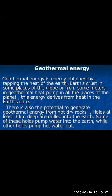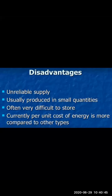The disadvantages of renewable energy include unreliable supply, as the technology is not yet fully developed. Energy is usually produced in small quantities, as seen with solar and wind energy. Supply can be limited and it is often very difficult to store. Currently, the per unit cost of energy from renewable sources is higher compared to other types.